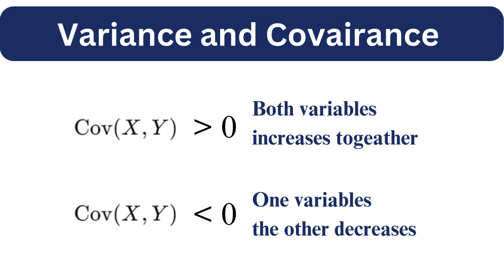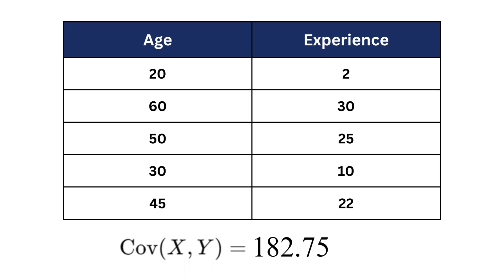However, covariance does not convey the strength of the relationship. For instance, consider the data set here. The covariance between age and experience is calculated to be 182.75, which indicates a positive correlation between the two. But how strong is that?